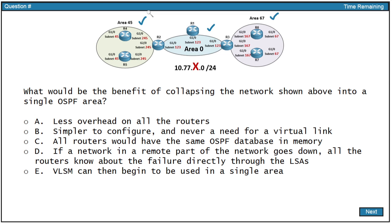Option A: less overhead on all of the routers. I've got a big problem with that particular response. That's not going to work at all, because if we collapse all of these into a single area, then we're going to place more overhead on all of the routers potentially. That's because all of the routers are going to have this identical link state database for all of the prefixes in this environment, and when there is some change in one of these prefixes, that will have to be communicated everywhere.